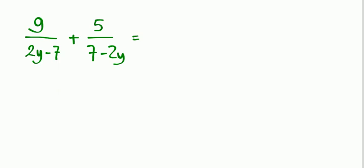I'm going to write the second denominator as the first denominator, because the first denominator and second denominator have their opposite sign. You know, 7 minus 2y can be written as negative 2y minus 7.